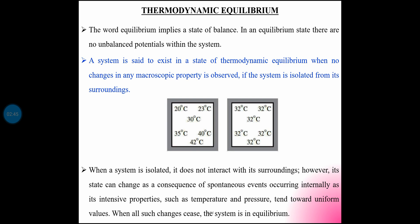An isolated system does not interact with the surroundings. However, its state can change as a consequence of spontaneous events occurring internally, as its intensive properties such as temperature and pressure tend toward uniform values. When all changes cease, the system is in equilibrium.